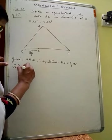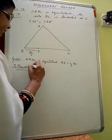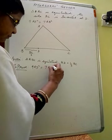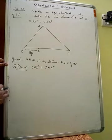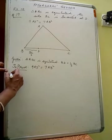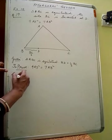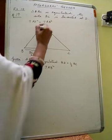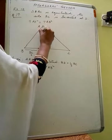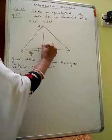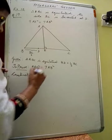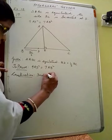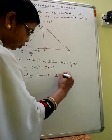To prove: 9AD² = 7AB². For solving this sum, we need a construction. Construction: Draw AE perpendicular to BC.